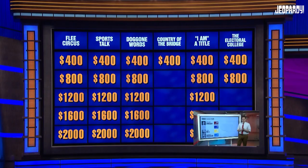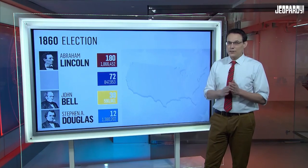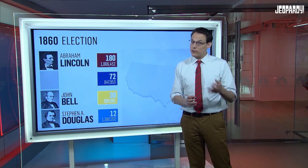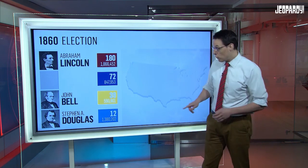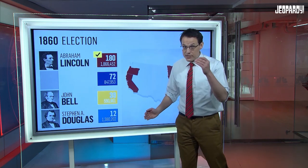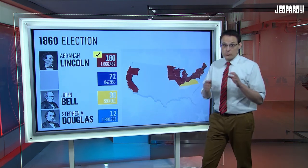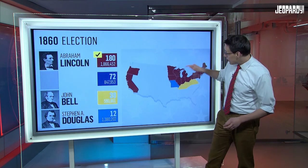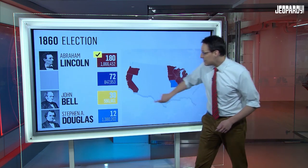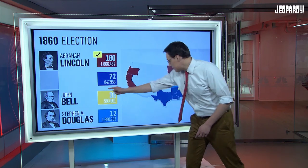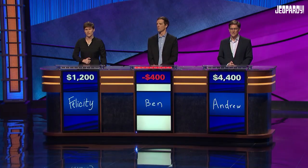Electoral College, $2,000. The 1860 electoral map revealed the deep divisions of a country hurtling toward civil war. Abraham Lincoln won the North, the West, and the presidency. Border states went for compromise candidate John Bell. Stephen Douglas carried Missouri. And this incumbent vice president and defender of slavery carried the South. Ben: Who is Breckinridge? Good.